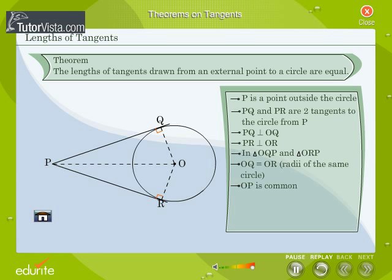OP is common. Triangle OQP is congruent to triangle ORP by RHS congruence. By CPCT, we get PQ is equal to PR.